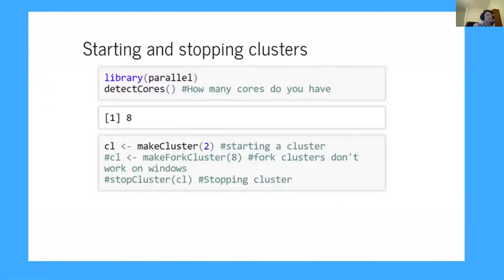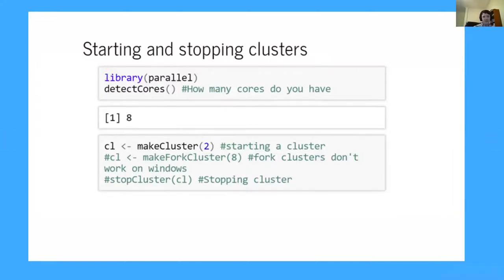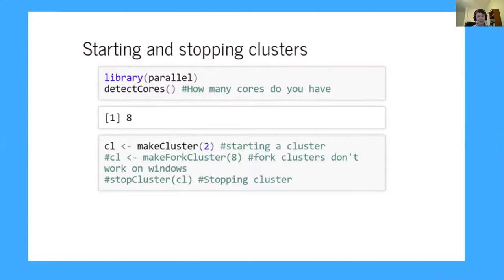So let's talk about some code. I'm going to go over some basic functions in the parallel library. The first function you're probably curious about is detectCores — how many cores does my computer have? I have eight cores, and that's the maximum number of workers I could have on my computer.